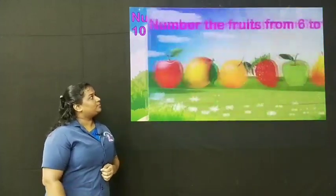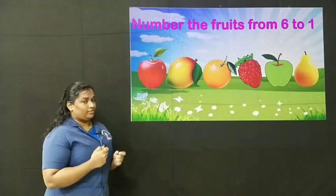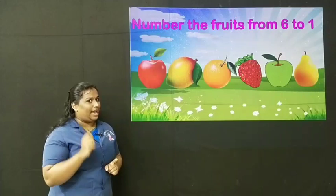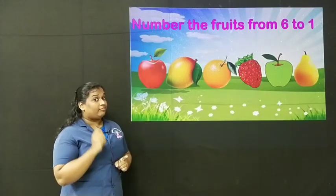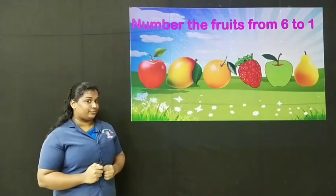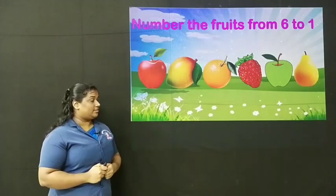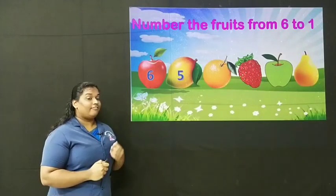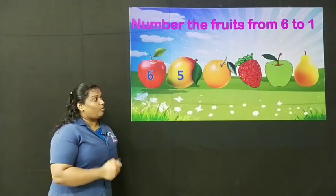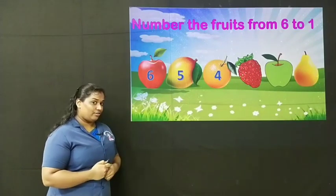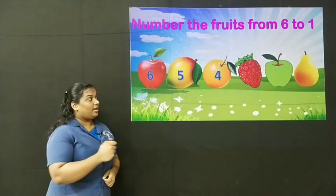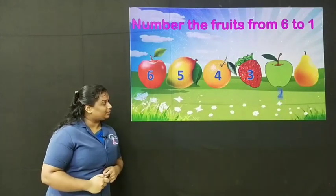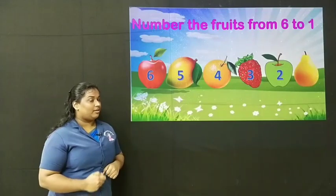One more question. Number the fruits from 6 to 1. 6 to 1 — we have to count backwards. So count backwards from 6 and number these fruits. The apple gets number 6, the mango gets number 5, the orange gets number 4, the strawberry gets number 3, the green apple gets number 2, and the last fruit gets number 1.